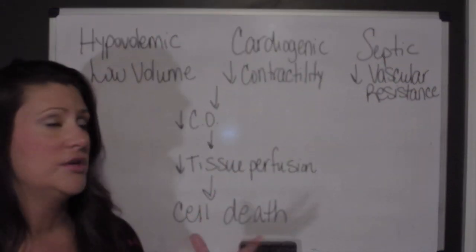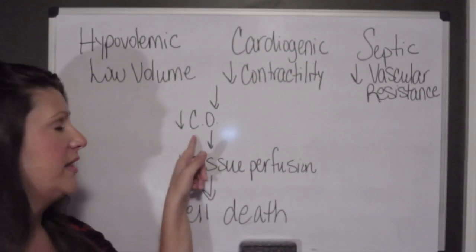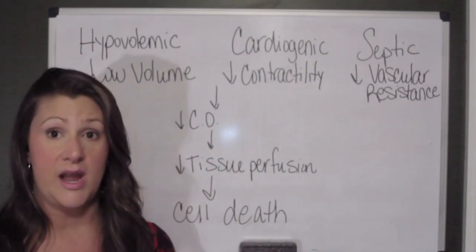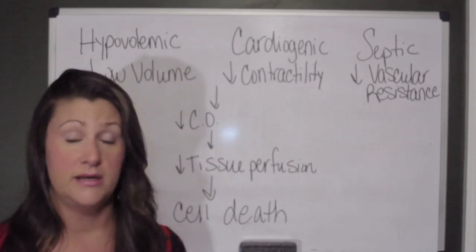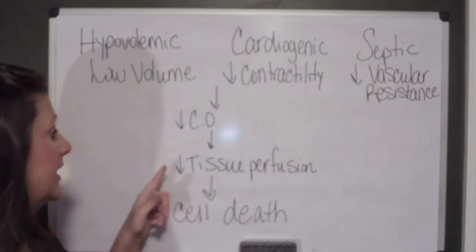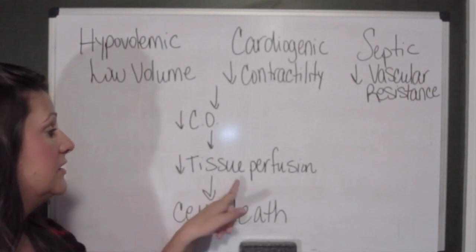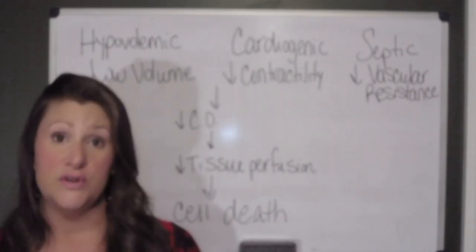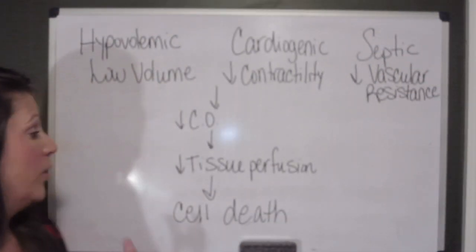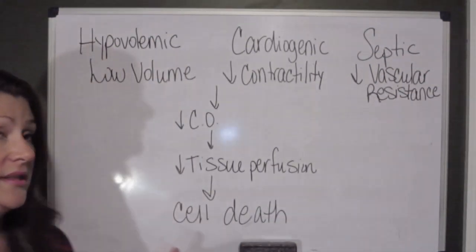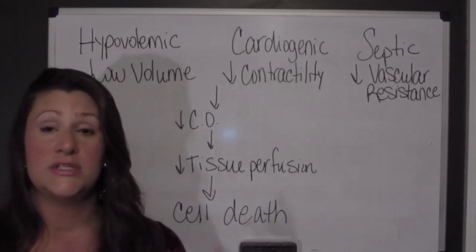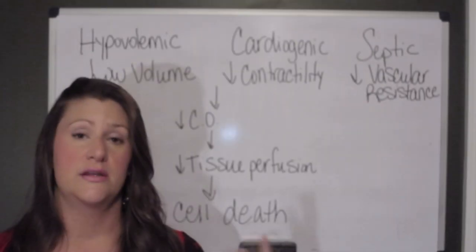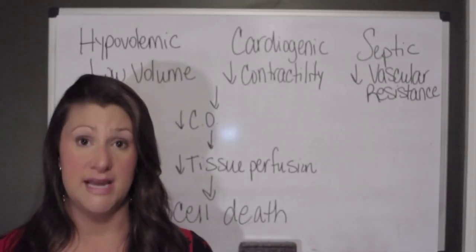Sepsis leads to decreased cardiac output, which leads to decreased tissue and organ perfusion, ultimately progressing to cellular hypoxia and cellular death. This common pathway is shared across the different types of shock.